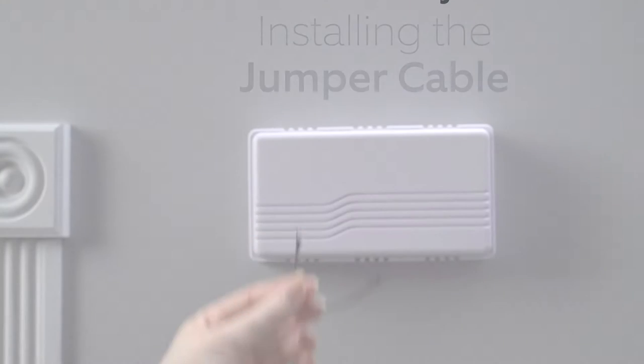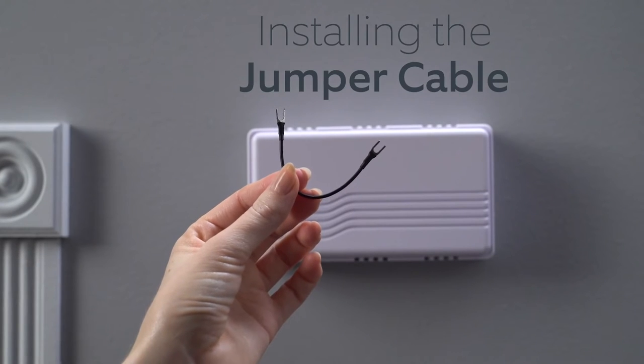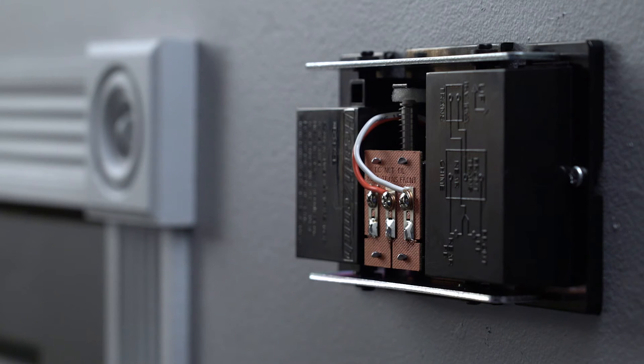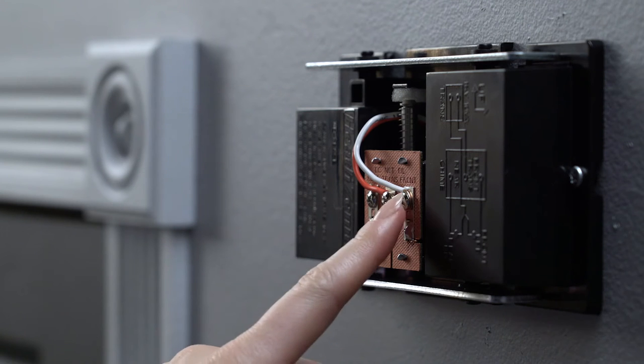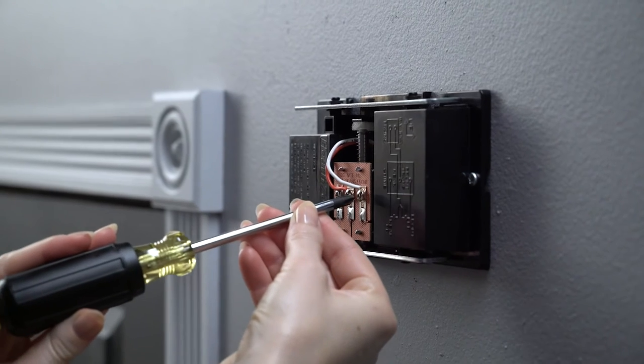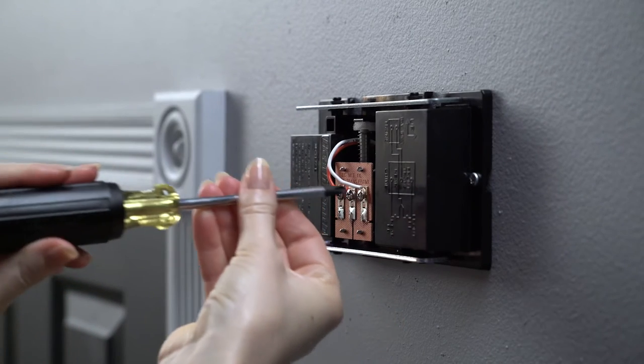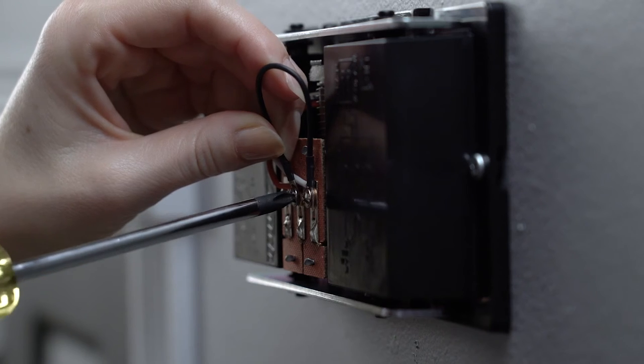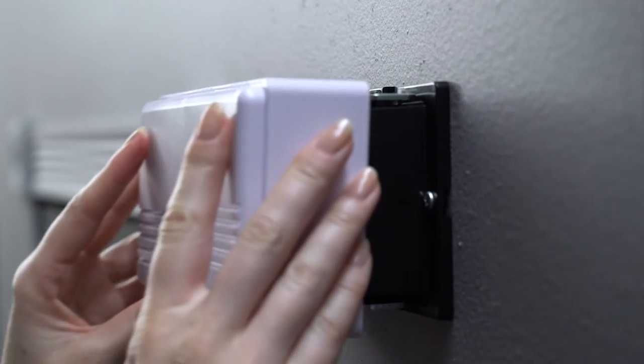Now that the power is off, let's install the included jumper cable in your doorbell chime. First, remove its cover. Then, loosen the terminal screws marked Front and Trans, taking care to leave the existing doorbell wires in place. Connect the jumper cable to these terminals, tighten the screws, and pop the cover back on.